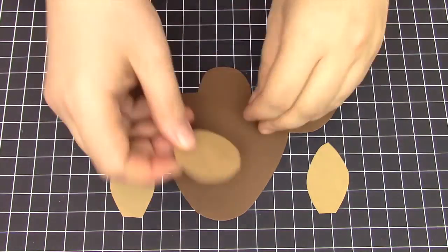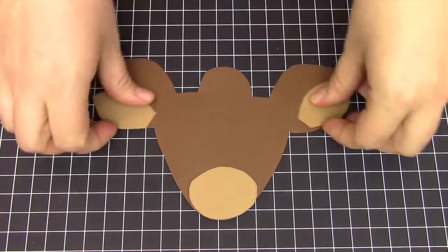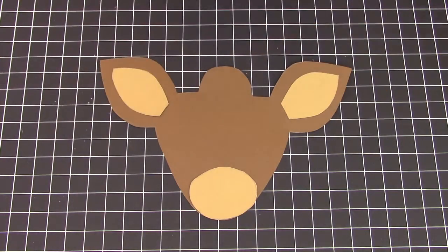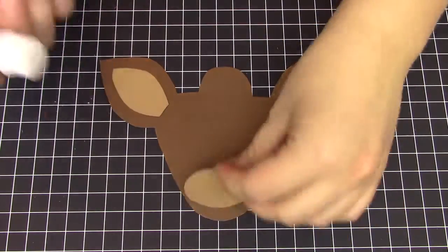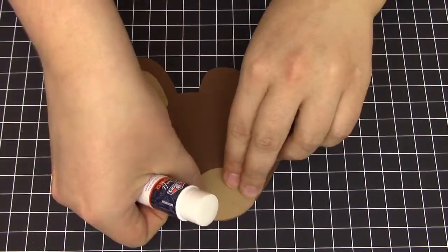Next, we will assemble the tan pieces onto the reindeer. Make sure the pointy teardrops match up a straight line on the ears. Take glue or tape and put it on the back side of the tan pieces to attach them to the reindeer's head.